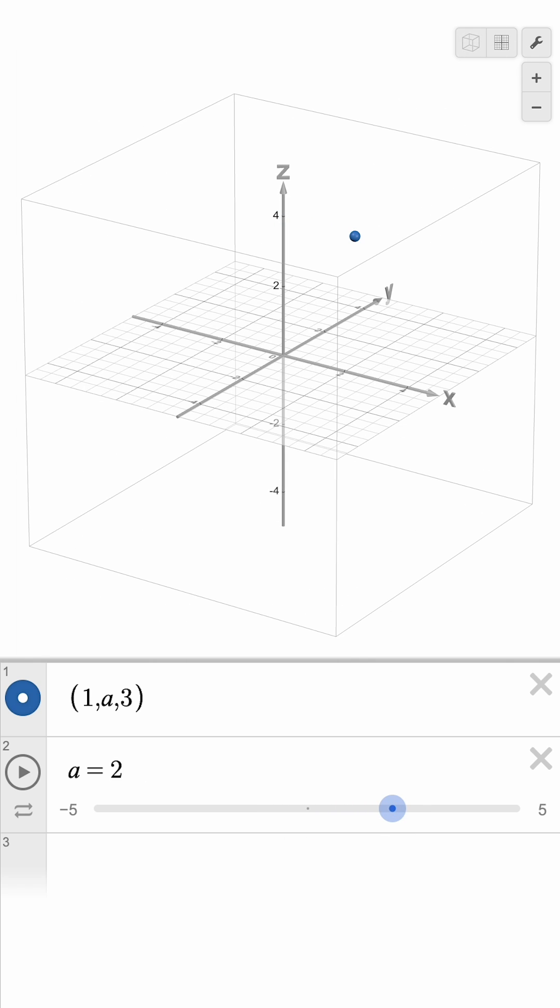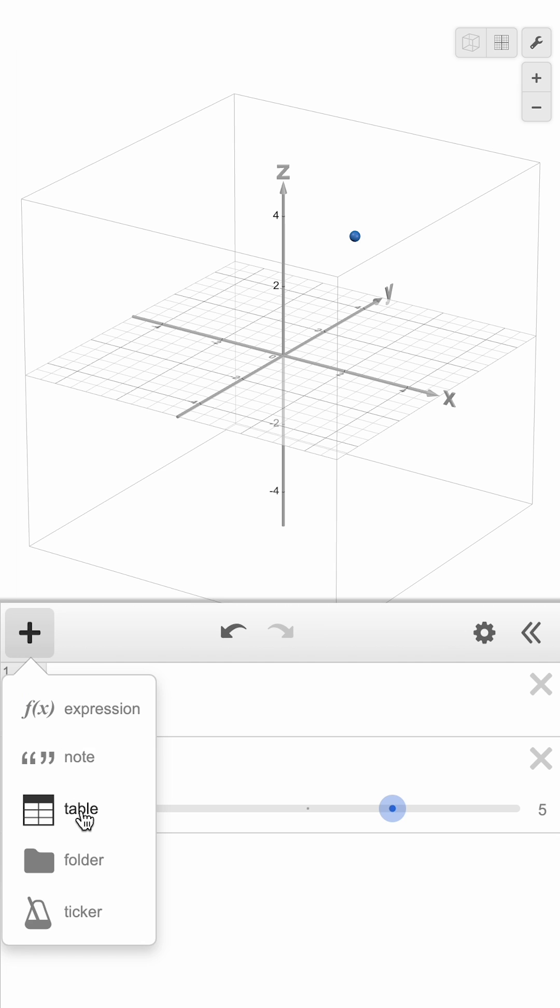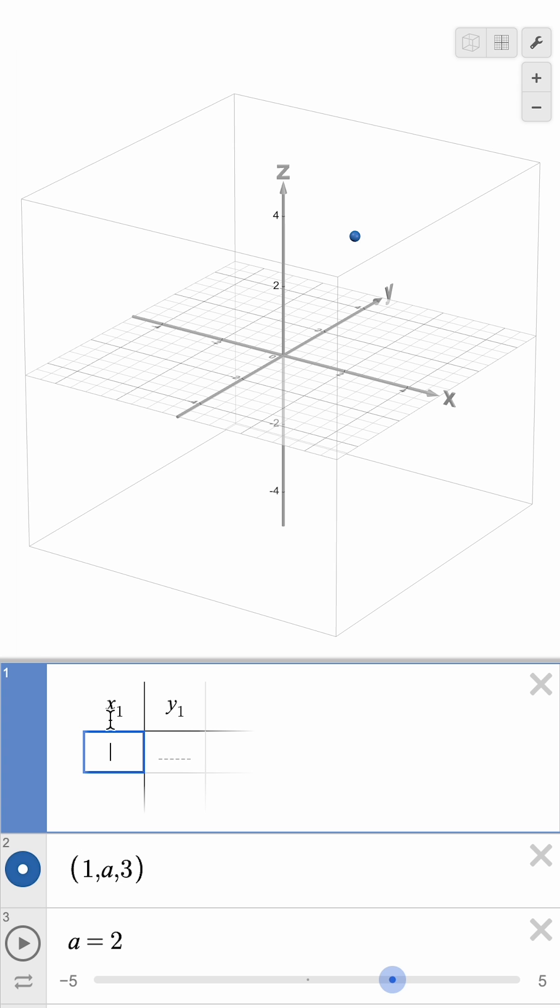We can also define points from a table. When we click to add a table, there will be columns for x and y values, and we can click to type in a new column for z values.